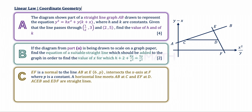In part C of this question, EF is a normal to the line AB at point E with coordinates (6, P). EF intersects the x-axis at F, where P is a constant. The horizontal line meets AB at C and EF at D.